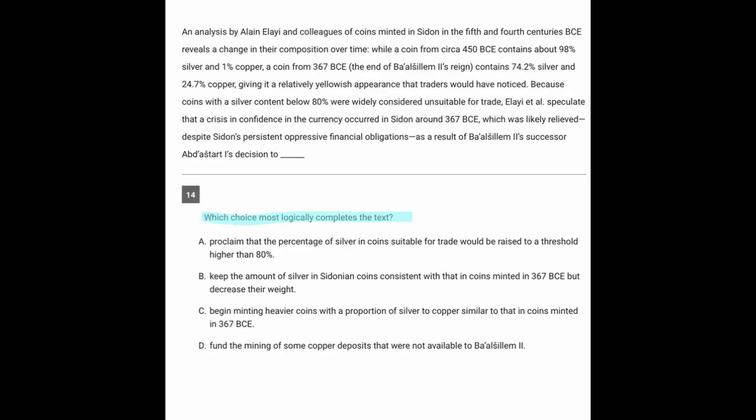So let's go ahead and start reading generally. An analysis of coins minted in this location in these centuries BC reveals a change in their composition over time, while a coin from 450 contains 98% silver, 1% copper, a coin from this later time contains less silver and more copper, giving it a relatively yellowish appearance that traders would have noticed.